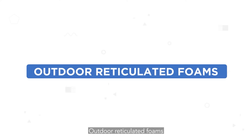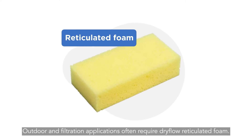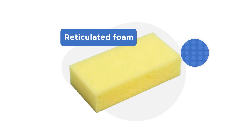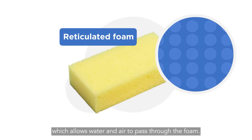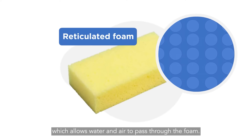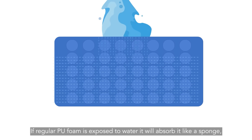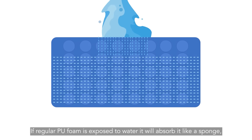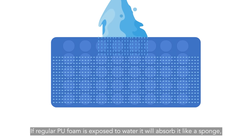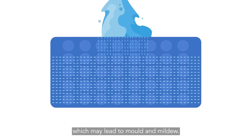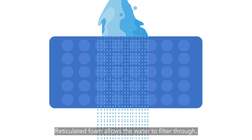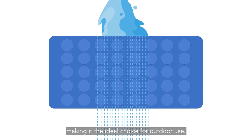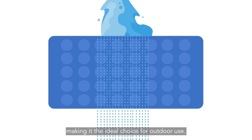Outdoor reticulated foams. Outdoor and filtration applications often require dry flow reticulated foam. This foam has an open cell structure which allows water and air to pass through the foam. If regular PU foam is exposed to water, it will absorb it like a sponge, which may lead to mould and mildew. Reticulated foam allows the water to filter through, making it the ideal choice for outdoor use.